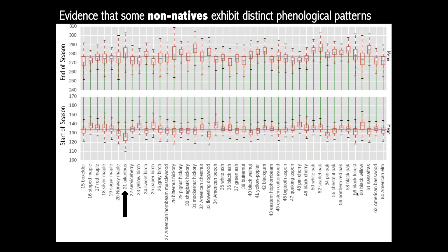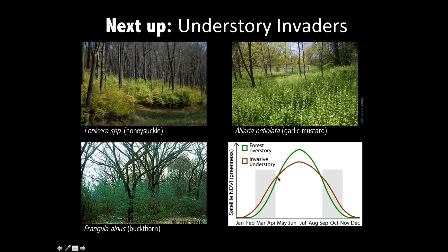That covers canopy invasive trees. Our next step is applying these datasets to look for understory invaders. When we have an invasive understory, we'd expect an earlier start of green-up and perhaps a later autumn senescence for places invaded by species like honeysuckle, garlic mustard, and buckthorn. We're hoping to use the phenology time series to map places experiencing earlier green-ups, then look in the field to see what's actually on the ground and whether we have invasives.